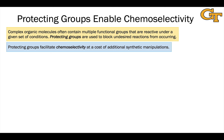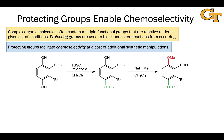Protecting groups can even be used to distinguish between two identical functional groups located at different positions within a starting material. In this starting material, we have two hydroxyl groups. One of them ultimately needs to become a methyl ether — the one highlighted in red. However, if we were to just treat this starting material with base and methyl iodide, we would get a mixture of methyl ethers at both hydroxyl positions.